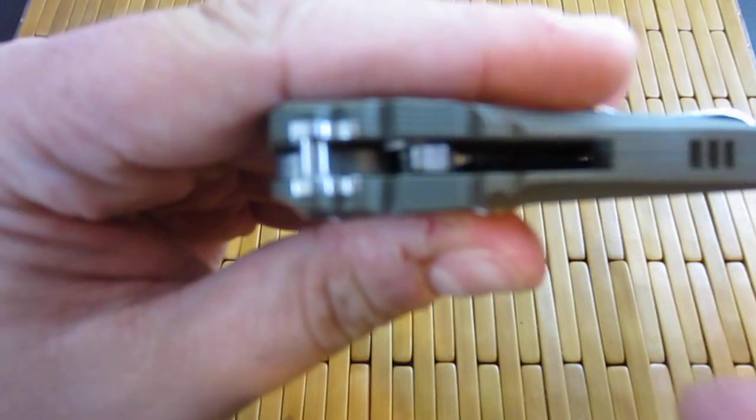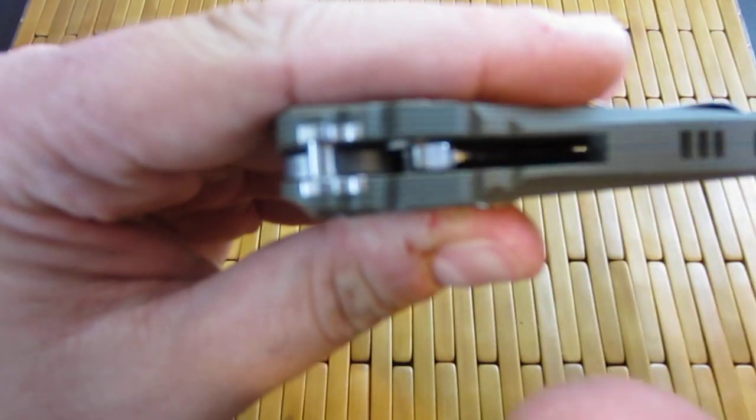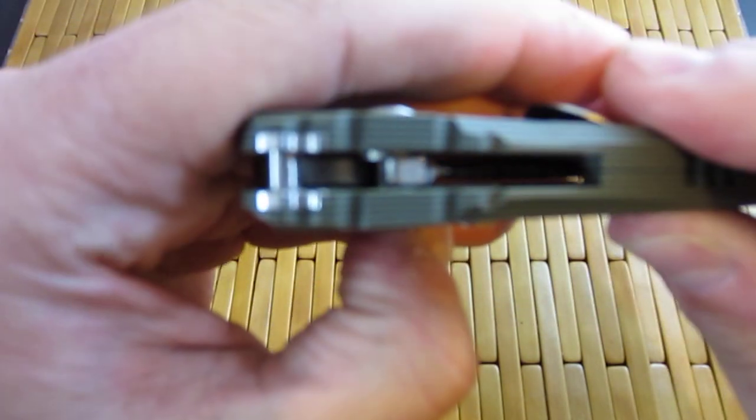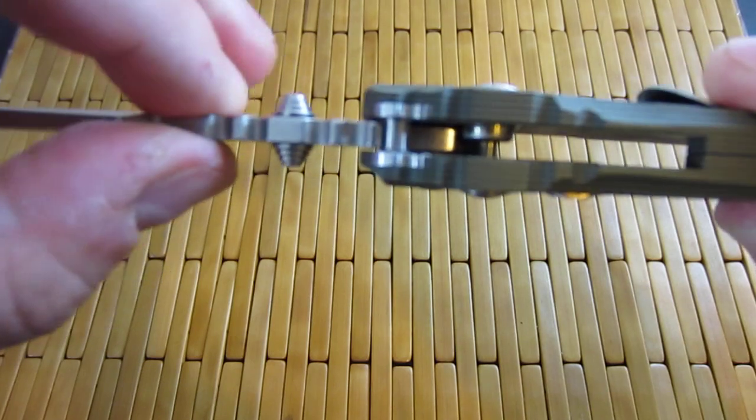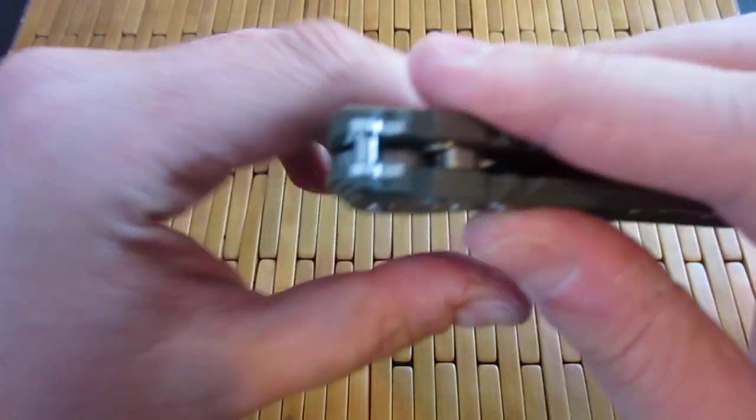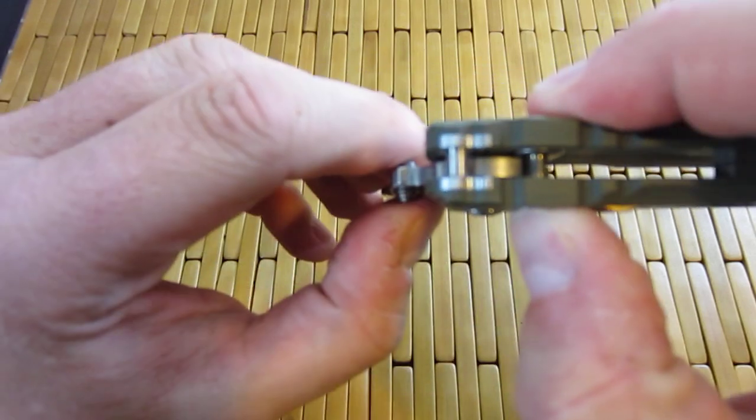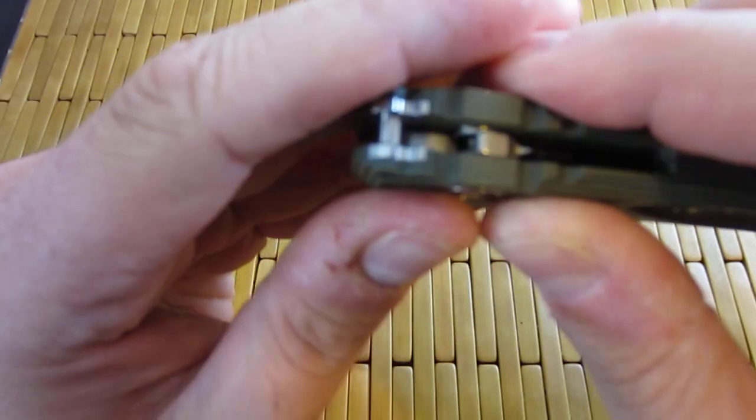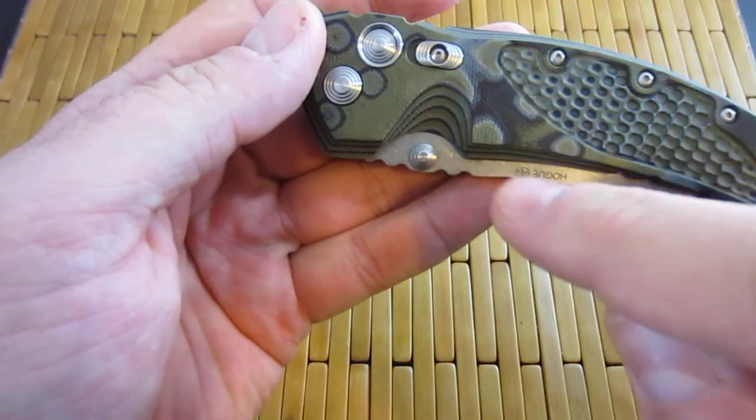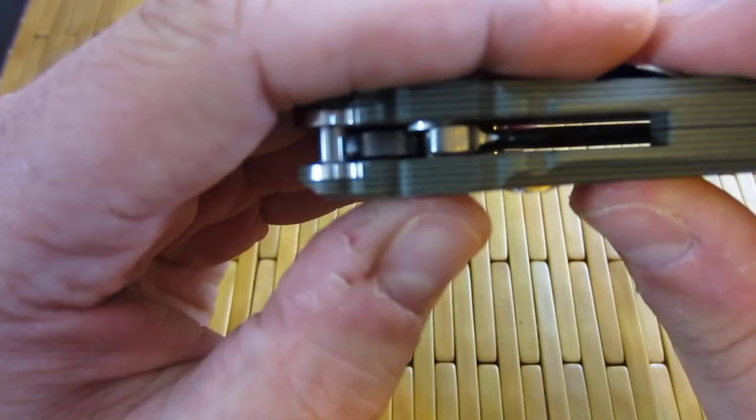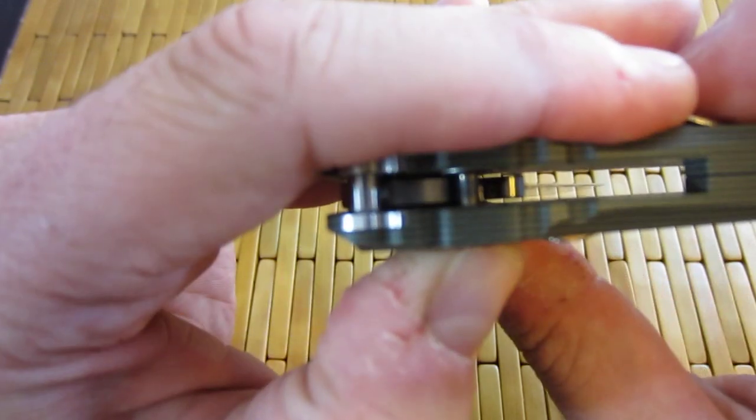Now if this was an actual auto, this would be a fully locked position. You wouldn't be able to open it like this. You would have to press this button to release it. In an auto, the blade is always under tension when closed and wants to fling open. So the second you press the button and relieve that lock, it would go flying open.